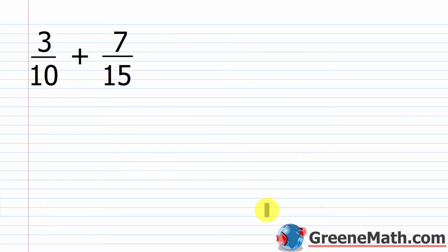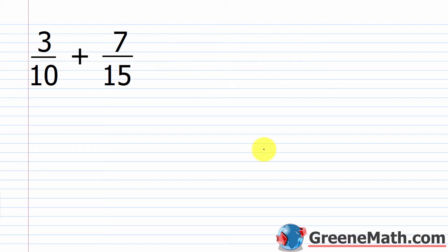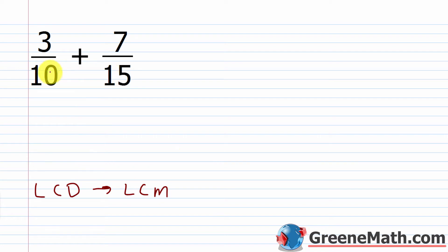Let's revisit with this example of adding fractions: three-tenths plus seven-fifteenths. We know that we can't just add across like we do with multiplication — three plus seven is ten, ten plus fifteen is twenty-five. I see students do that; that's wrong. We need to have a common denominator before we start, and the most efficient common denominator is the least common denominator. The LCD equals the least common multiple of 10 and 15.